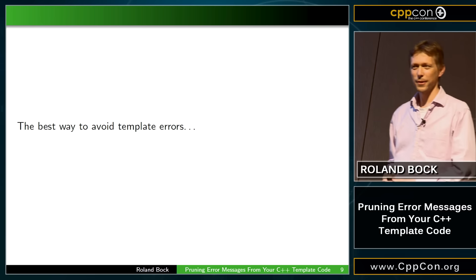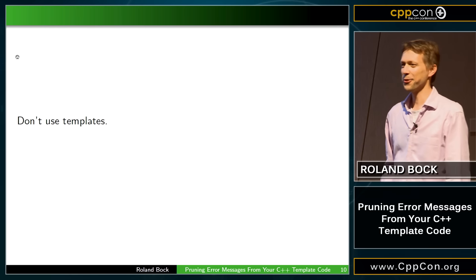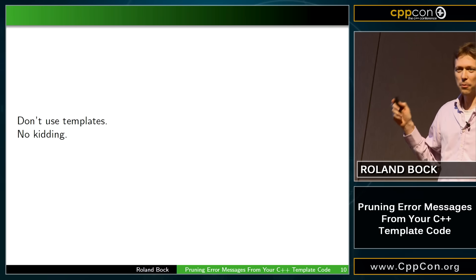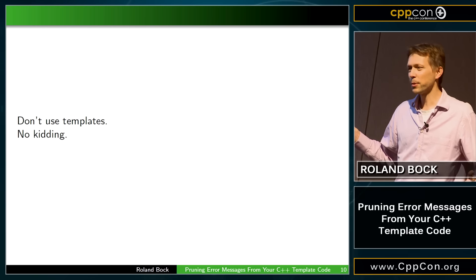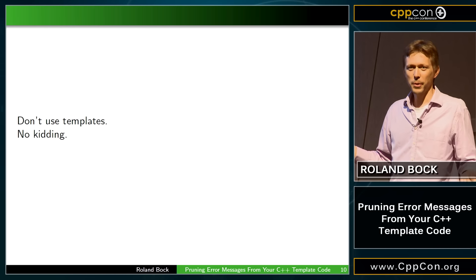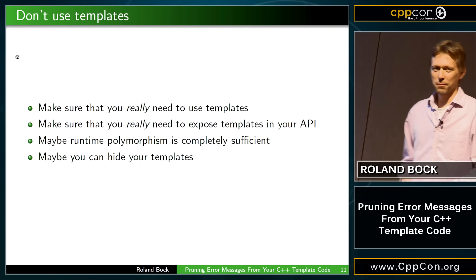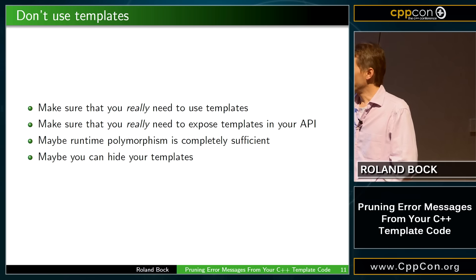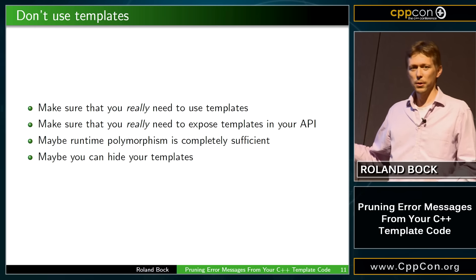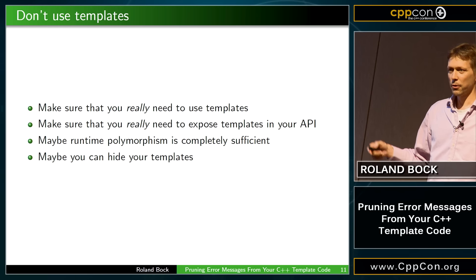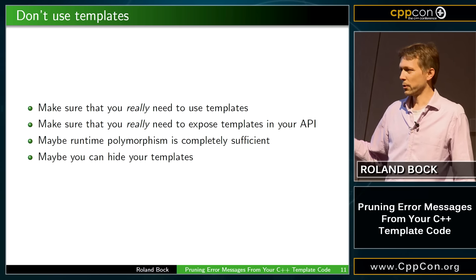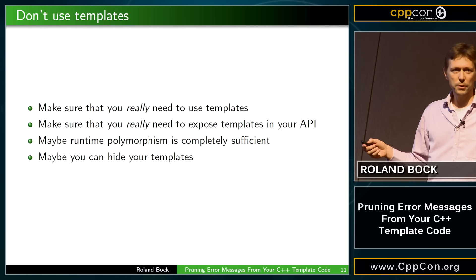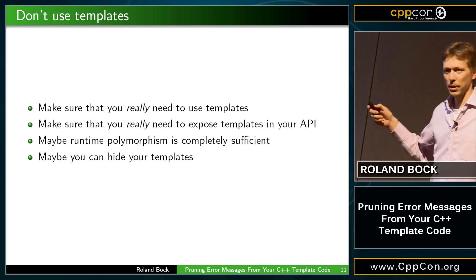Who knows the best way to avoid template errors? Don't use templates. I'm not kidding. I've seen so many developers using templates just because they can — 'It's C++, we have to be generic.' Make sure that you really need them. Make sure that you really need to expose them, even if you use templates in your own library. Maybe a simpler, non-template interface is totally sufficient. Maybe you don't need compile-time polymorphism — maybe runtime polymorphism is totally sufficient. In that case, forget about the templates or at least don't expose them.